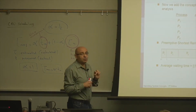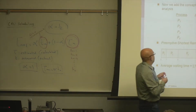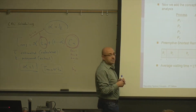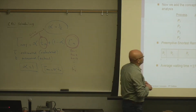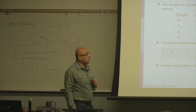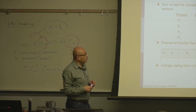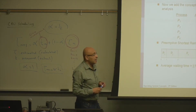At time one, the system has two options: P1 and P2. It's going to make a selection based on the remaining CPU burst length. The remaining length for P1 at time one is seven — the total is eight and it has already used one unit. The remaining time for P2 is four. We're comparing seven with four, and four is smaller, so P2 gets the CPU. At time one, P2 preempts P1.